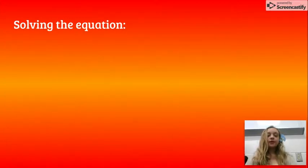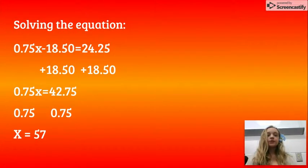To solve this equation, we first have to isolate the variable, which means to get the variable by itself. We would do inverse operations, so we would add 18.50. You have to perform the same operation on both sides of the equal sign. You would add 18.50 to the 24.25. Since it was a negative, the adding of 18.50 on the left cancels out.